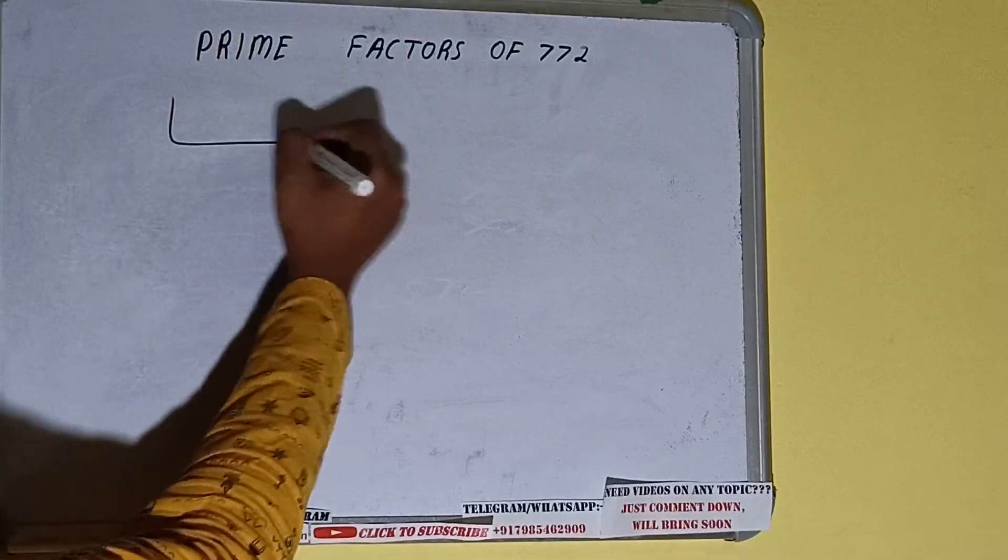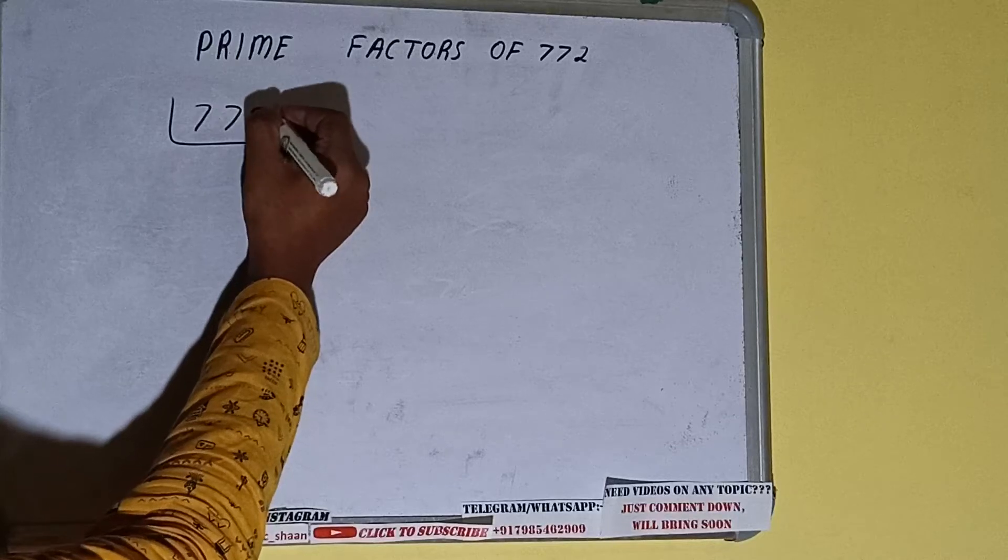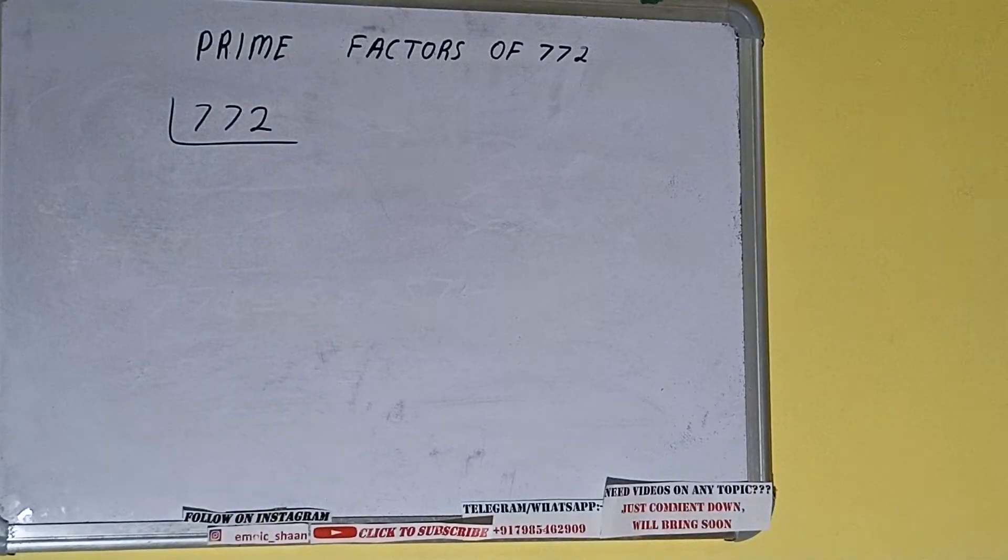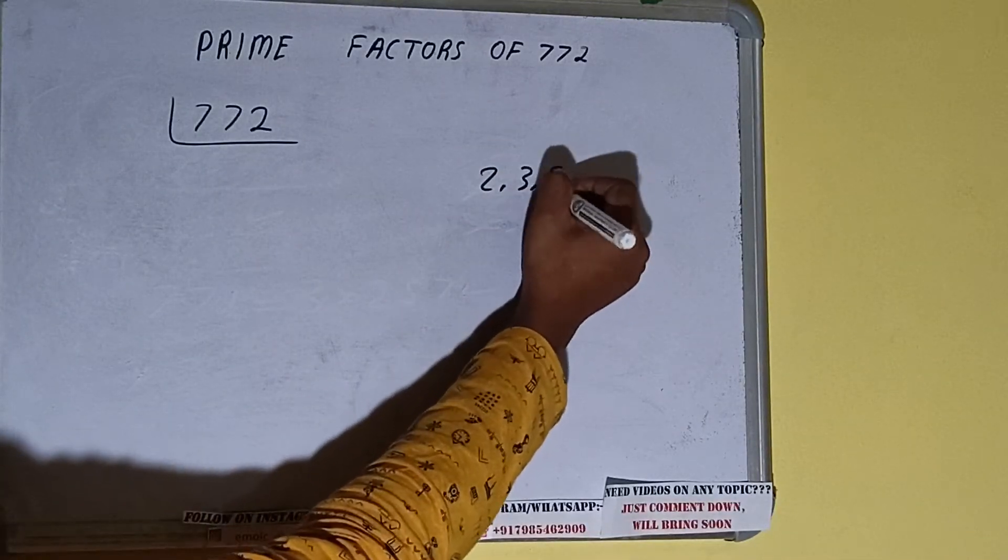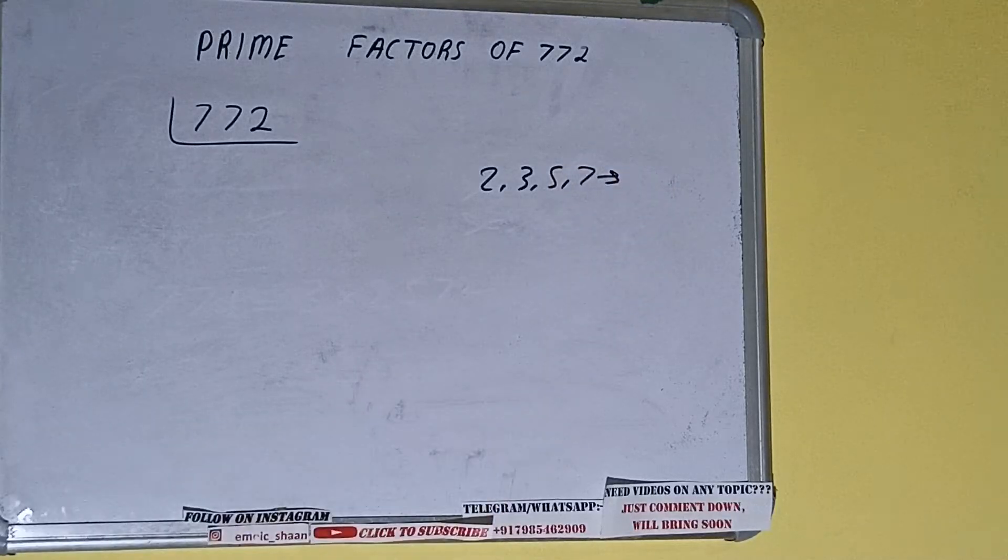First of all, we need to write the number like this. The next thing we need to know about is what are prime numbers. Prime numbers are numbers that are divisible by 1 and the number itself, like 2, 3, 5, 7, and so on.